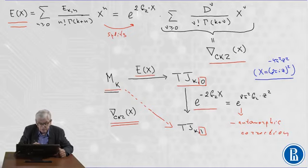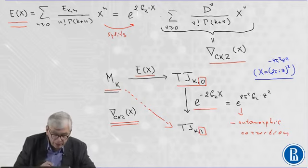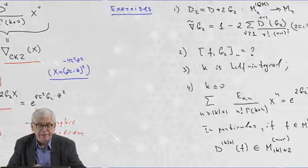Starting from a modular form of weight K, we get the Jacobi type form of weight K and index 1. Now I can formulate some number of exercises.